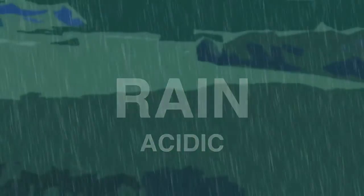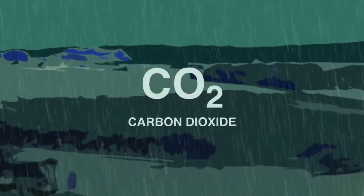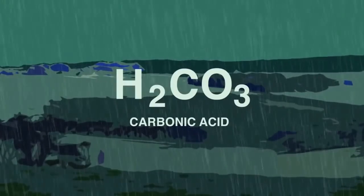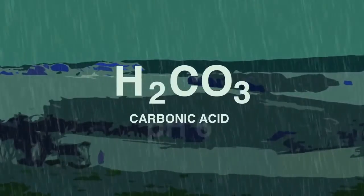Firstly, it's important to understand that rain is naturally slightly acidic. Whilst falling to the ground, the rain dissolves carbon dioxide from the atmosphere to form carbonic acid, a weak acid giving natural rain a pH of 6.